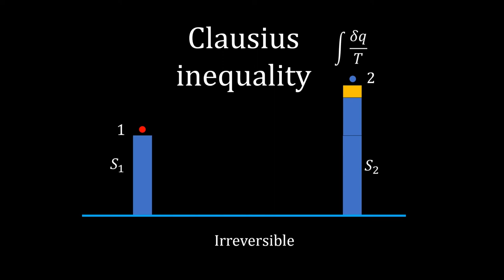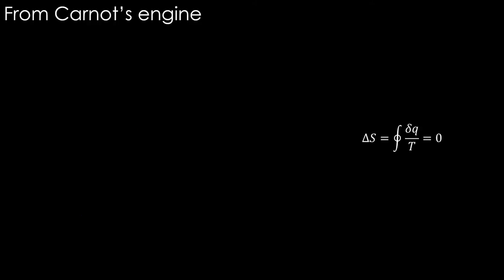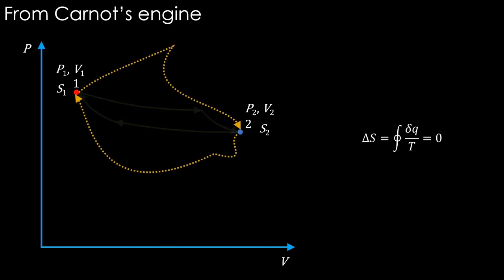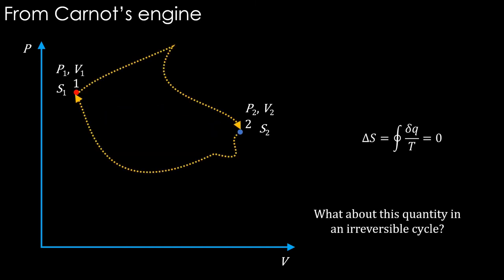In this video we will see what is Clausius inequality and the formal definition of entropy. We have seen that entropy change is zero over a cycle of reversible processes. What about a cycle of irreversible processes?